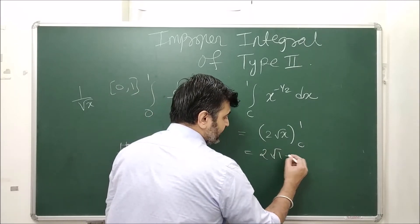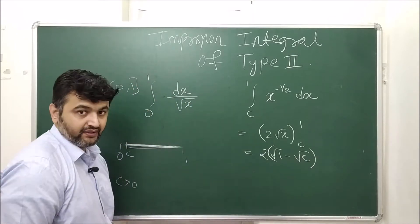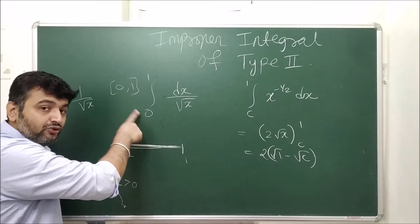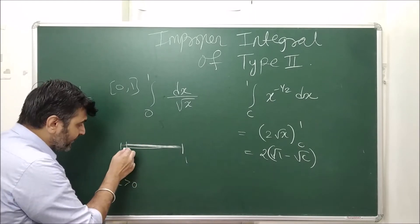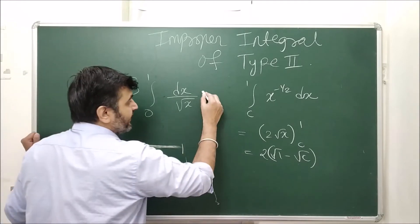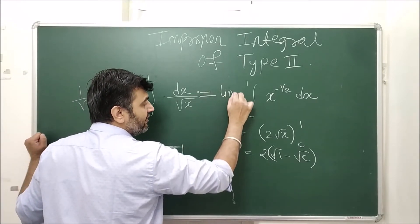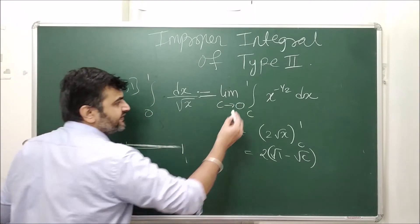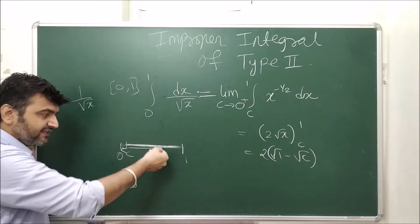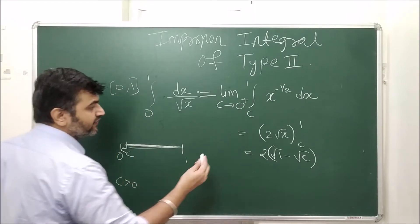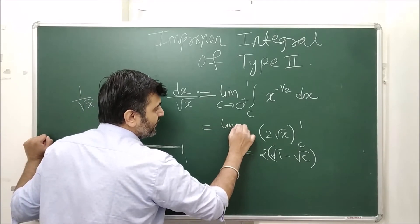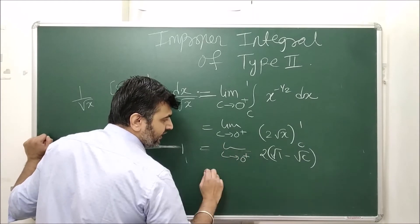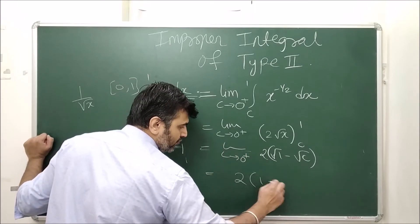We integrated from c to 1. Now to get the integral from 0 to 1, we take the limit as c approaches 0. Many authors write c approaching 0+ because we are approaching 0 from the right-hand side. Applying the limit to 2(√1 − √c) as c → 0+ gives 2(1 − 0) = 2.